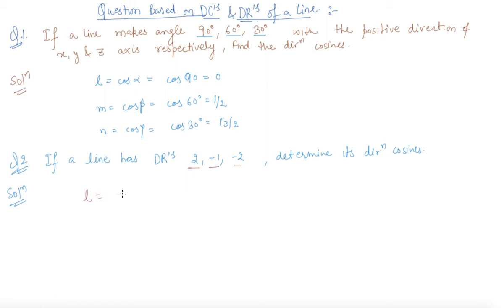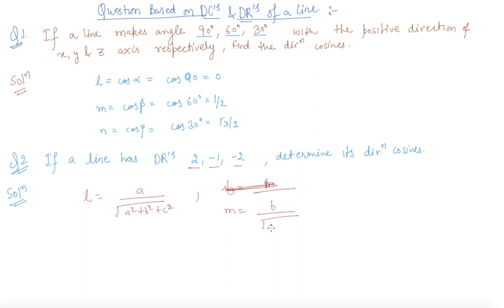I can write the direction cosine L as A over √(A² + B² + C²), M is equal to B over √(A² + B² + C²), and similarly N is equal to C over √(A² + B² + C²), where A, B, C are the direction ratios that are given.